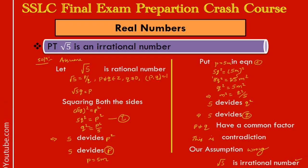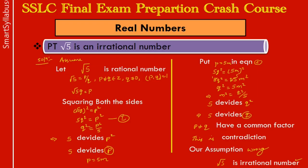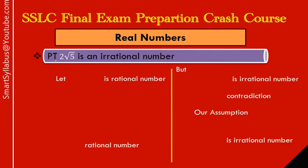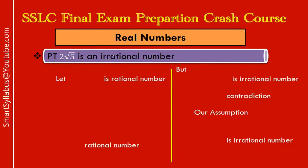Therefore, root 5 is an irrational number. We have now solved two important examples of the monomial type. There is one more type of monomial sum — monomial with a coefficient. Let's check how to solve that. The sum is: prove that 2√5 is an irrational number. Notice the difference — here there is a coefficient 2 in front of root 5.